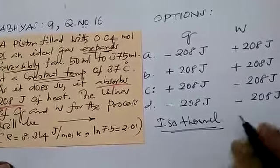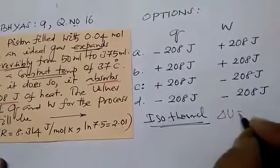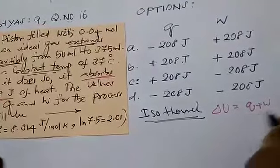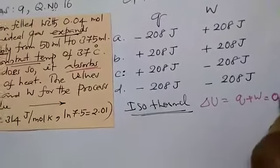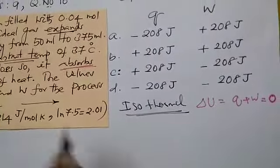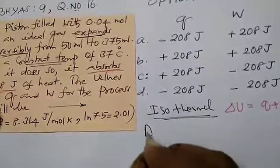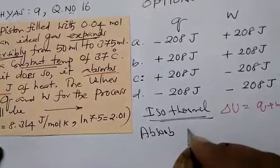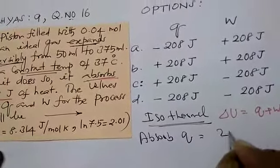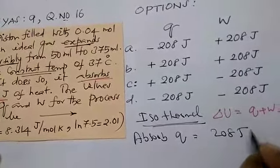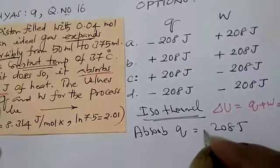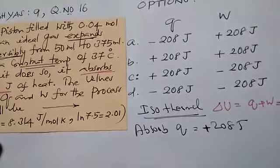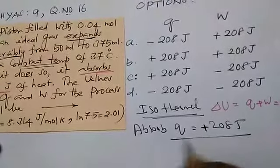Piston with free expansion of ideal gas expands reversibly at constant temperature. This is isothermal reaction. For isothermal reaction, ΔU = Q + W = 0. It absorbs heat 208 joules. Absorption means endothermic, so plus. Q is finished, it is +208.